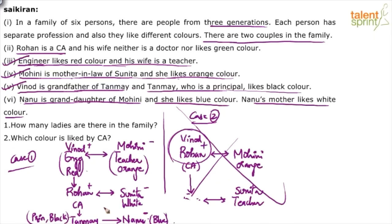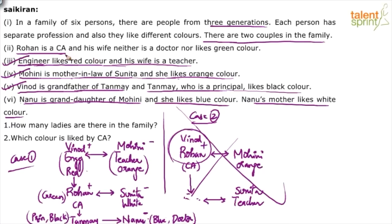Regarding colors: red, orange, white, blue, black — what is the remaining color? Rohan is a CA and his wife neither is a doctor nor likes green color. Since all other professions (engineer, teacher, CA, principal) are fixed, and the word doctor appears, Nanu must be the doctor. Sunita is not a doctor and does not like green color. Since all other colors are assigned, Rohan likes green color.